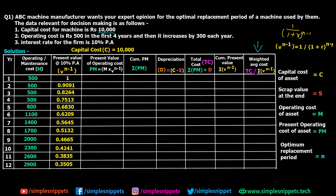Now we calculate the present value of operating cost (PM) by multiplying M × v^(n-1). For year 1: 500 × 1 = 500. For year 2: 500 × 0.9091 ≈ 455. For year 3: 500 × 0.8264 ≈ 413. You can round off decimal values. I've now filled out the entire present operating cost column.